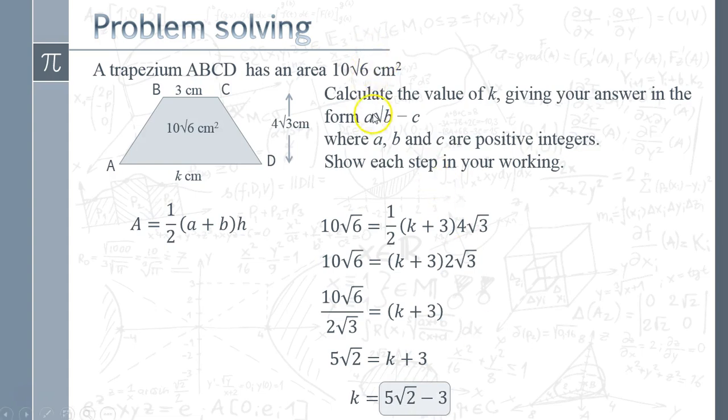And you can see clearly that that is in the same format as we were asked for up here, where a is worth 5, b is worth 2 and c is worth 3.